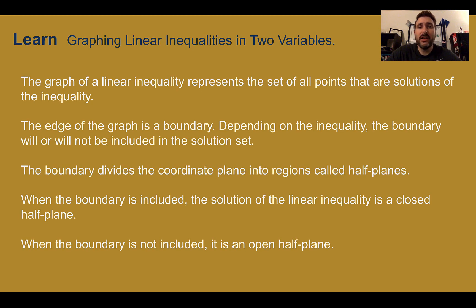Let's learn. Graphing Linear Inequalities in Two Variables. The graph of a linear inequality represents the set of all points that are solutions of the inequality. When we had one variable, that was represented on a number line. The arrow, if you remember, was where all the solutions were located. Anything in the arrow was a solution, anything outside the arrow was not a solution.